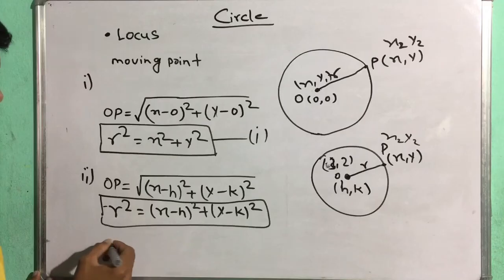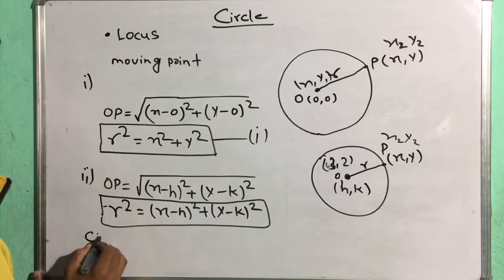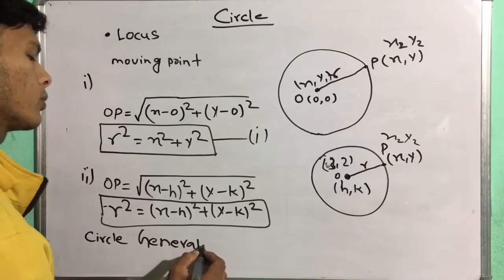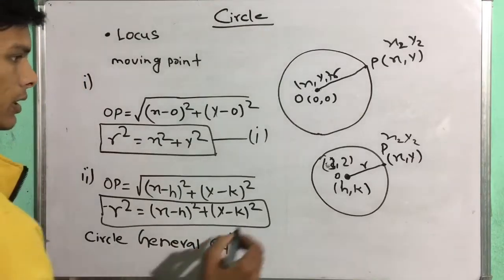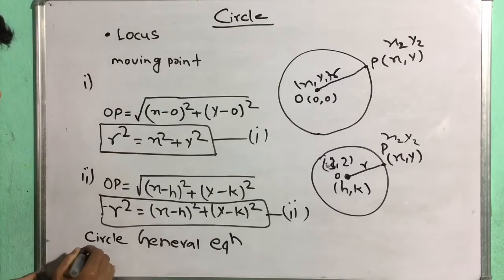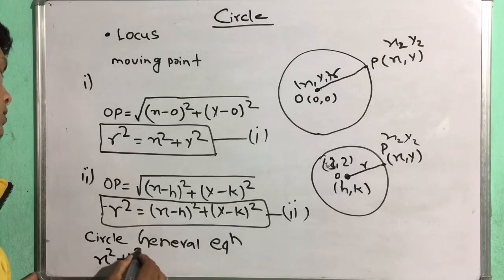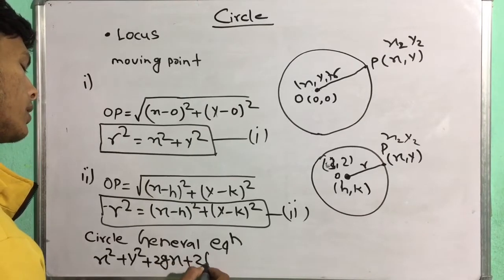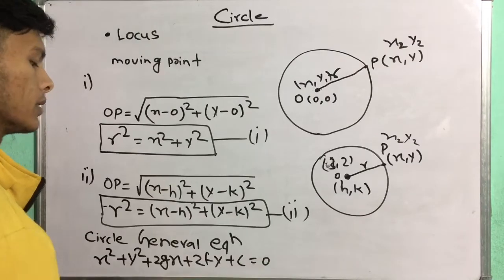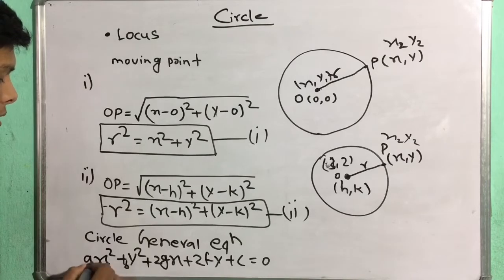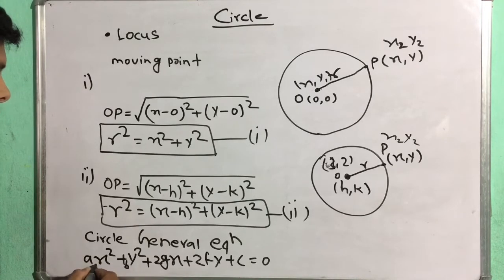If we expand this, we get the general equation of the circle. The general equation of the circle — the final equation — is: x² + y² + 2gx + 2fy + c = 0.